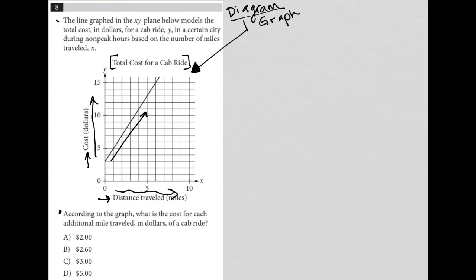According to the graph, what is the cost for each additional mile traveled in dollars of a cab ride? Okay, so in essence, this is asking for the slope of this line. But even if you didn't realize that the question was asking for the slope, because it asks each additional mile, each additional mile is like each additional x. And what is the cost is y. So even if you didn't recognize that, we know that,